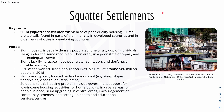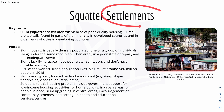Then we have squatter settlements. Slums or squatter settlements — they're the same thing — describes an area of poor quality housing. Slums are typically found in parts of the inner city in developed countries and in older parts of cities in developing countries. These settlements are usually densely populated because lots of people live in one single area, making them high density housing. They also have small living space and poor water sanitation.